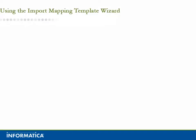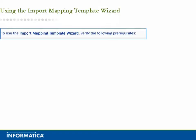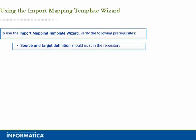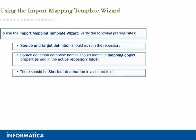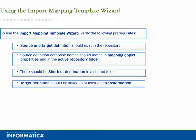Using the Import Mapping Template Wizard. To use the Import Mapping Template Wizard, verify the following prerequisites: source and target definitions should exist in the repository; source definition database names should match in mapping object properties and in the active repository folder; there should be a shortcut destination in a shared folder; and target definition should be linked to at least one transformation.